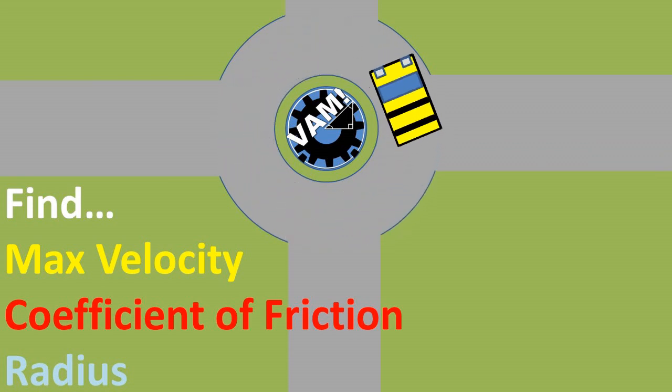In this problem, we will solve for the max velocity, coefficient of friction, and radius when only given two of the variables listed.